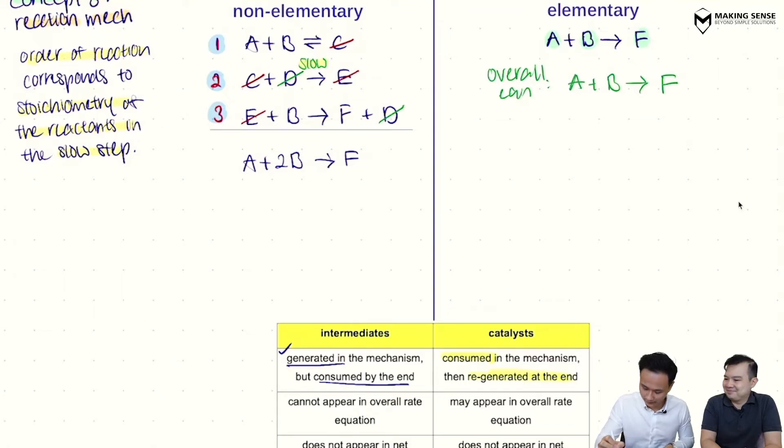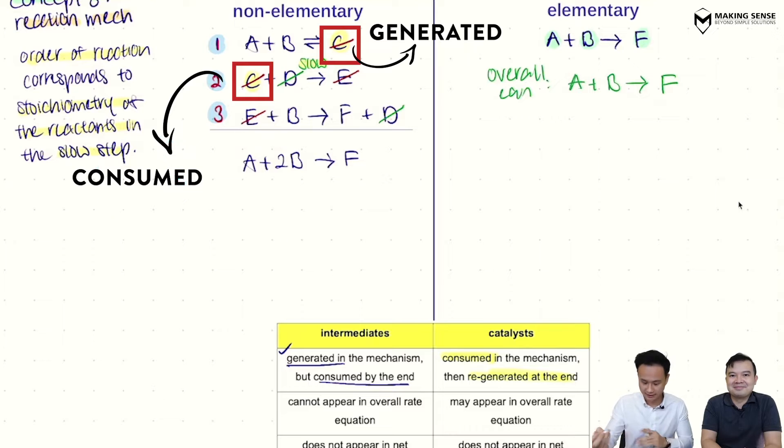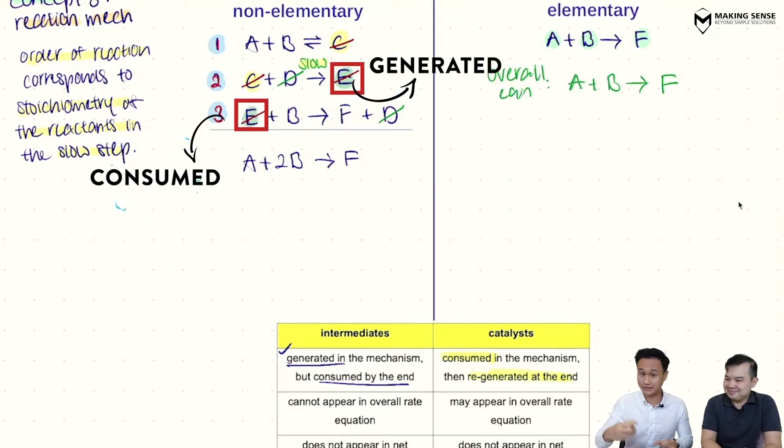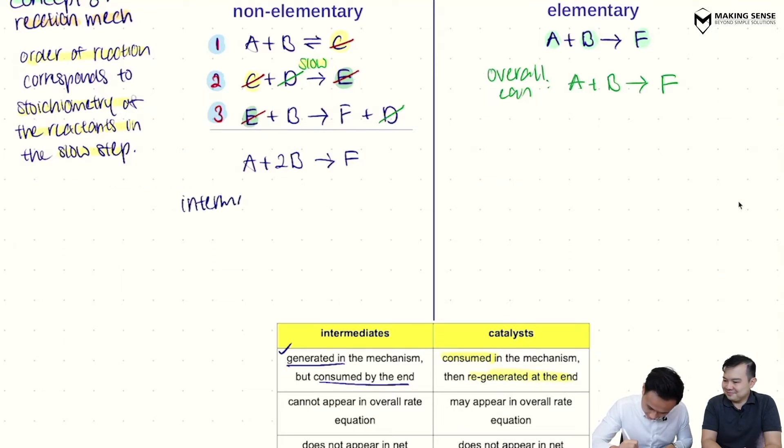So using that, Mr. Tim, can you look at the things that you have cancelled and tell me who is a catalyst and who is an intermediate? Sure. Okay, so you can see for C right? It's being generated first, then later consumed. So clearly it's an intermediate. Same thing for E. Generated first, then later consumed. So intermediate. So your intermediates here are basically C and E.